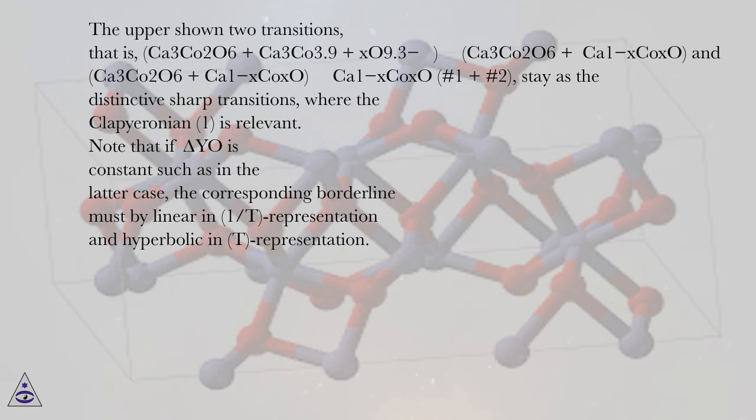The upper shown two transitions, i.e., Ca₃Co₂O₆ + Ca₃Co₃.₉₊ₓO₉.₃₋ ⇌ Ca₃Co₂O₆ + Ca₁₋ₓCoₓO, and Ca₃Co₂O₆ + Ca₁₋ₓCoₓO ⇌ Ca₁₋ₓCoₓO #1 + #2, stay as distinctive sharp transitions where the Clapeyron equation 1 is relevant.